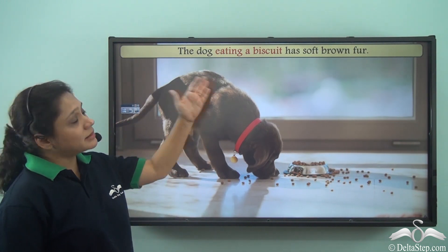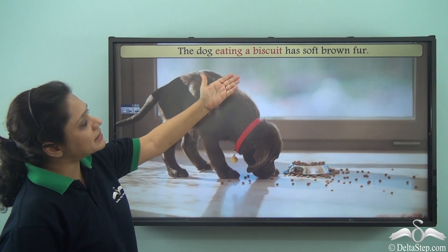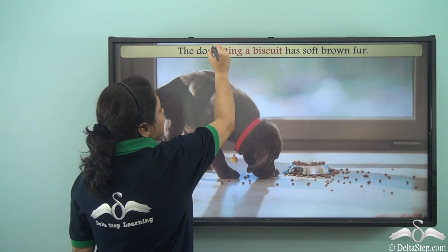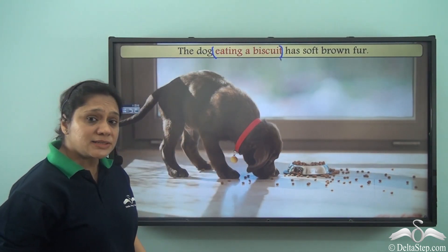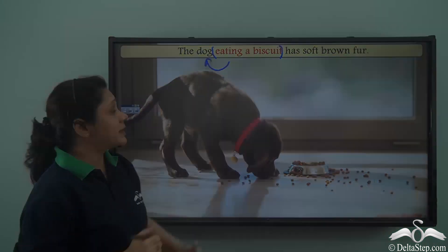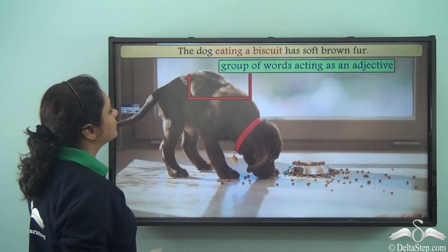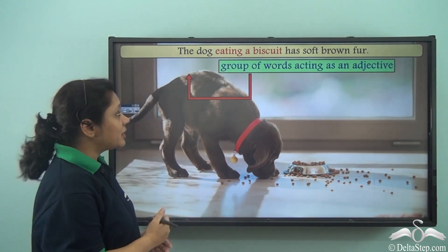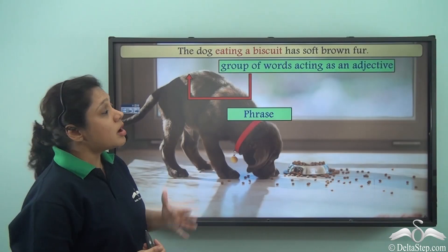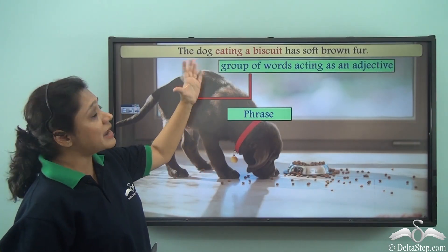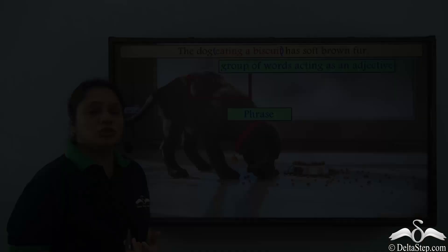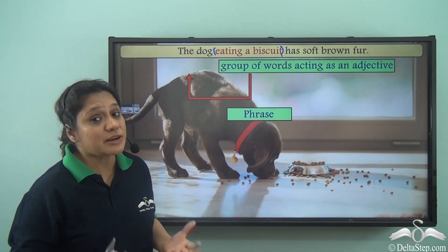Now let us look at this sentence: 'The dog eating a biscuit has soft brown fur.' So 'eating a biscuit' is a group of words which is describing the dog. This group of words is acting as an adjective — it is describing the dog and is a phrase. Now how do we know it is a phrase? Because this group of words has no subject doing a verb.